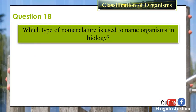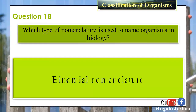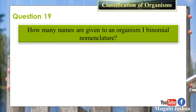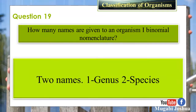Question 18: Which type of nomenclature is used to name organisms in biology? Answer: Binomial nomenclature. Question 19: How many names are given to an organism in binomial nomenclature? Answer: Two names — one genus name and one specific species name.